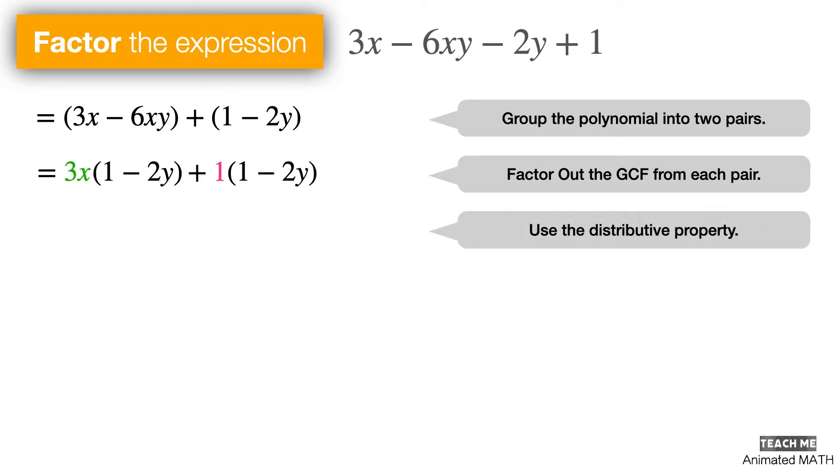Using the distributive property of multiplication, you can factor out 1 minus 2y. The final answer is 3x plus 1 times 1 minus 2y.